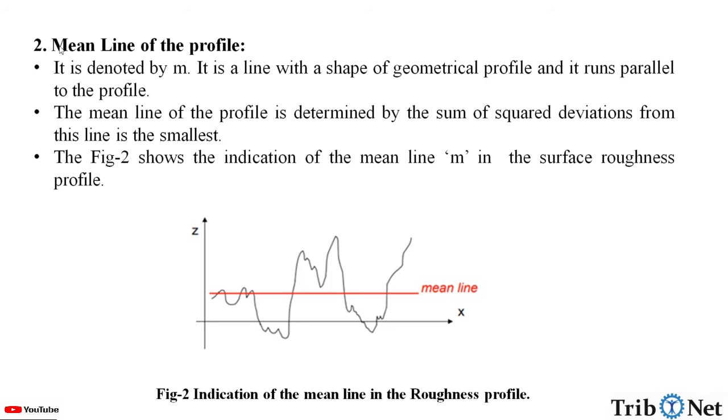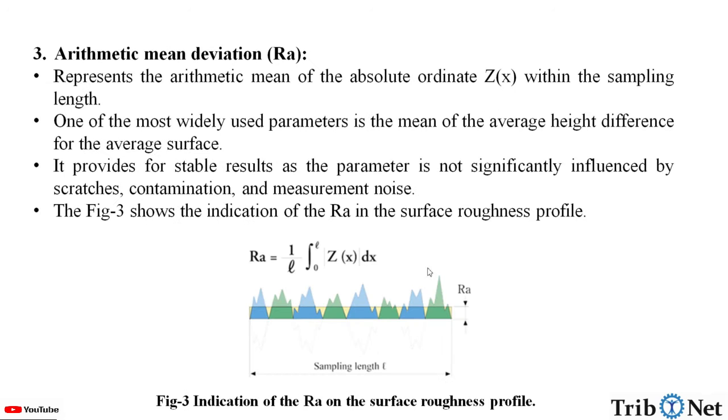Let us study one by one and understand what they are. First one, mean line of the profile. It is denoted by small letter m. It is the line with the shape of geometrical profile and it runs parallel to the profile. The mean line of the profile is determined by the sum of squared deviations from this line which is the smallest. The figure 2 shows the indication of the mean line m in the surface roughness profile. Here we can see the red line which is the mean line.